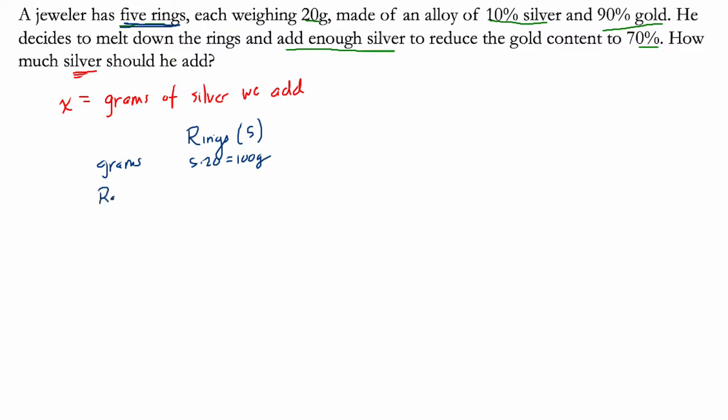Now we've got a rate. Well, we've got a rate in terms of gold and silver. I'm adding silver to change the gold, so let me focus on the gold rate here. The gold is 90%, so it's 0.9 or 90%.